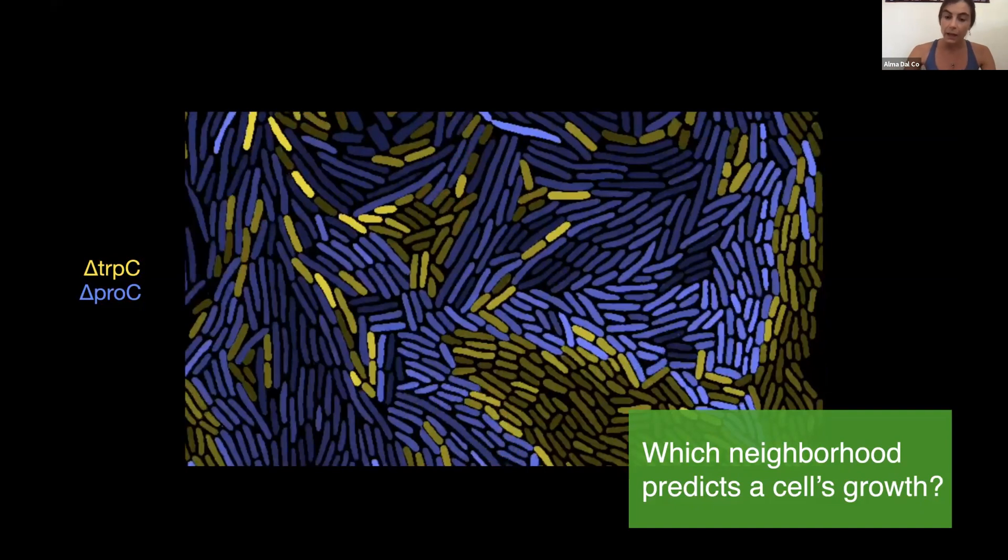As you can see growth rates of cells close to the interface are higher and you can also notice that the purple cell grows well also far away from the interface between the two cell types. So how can we use now this rich data set to answer the question how large is the neighborhood that predicts the cell's growth rate?